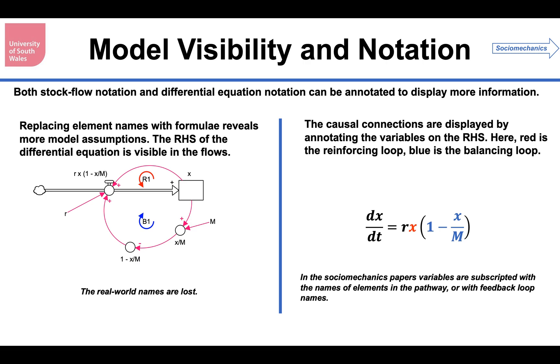The other thing I do is highlight the feedback loops on the differential equation. So on the right-hand side, in this case, I've colored them. If you look in my papers on the Sociomechanics website, you'll find that there we annotate those papers with subscripts or with loop names. That is a mathematically sound way of capturing the causality that underlies the differential equation model. But for this presentation, I just thought colors would be a little bit better.